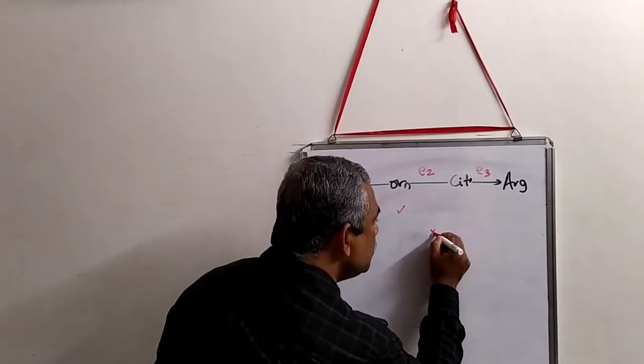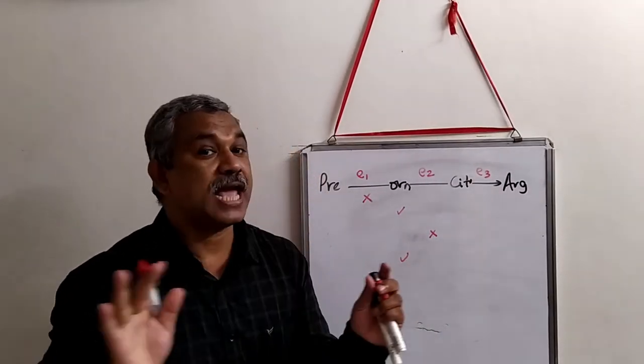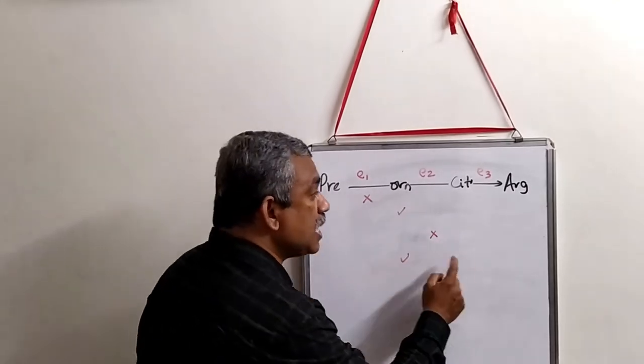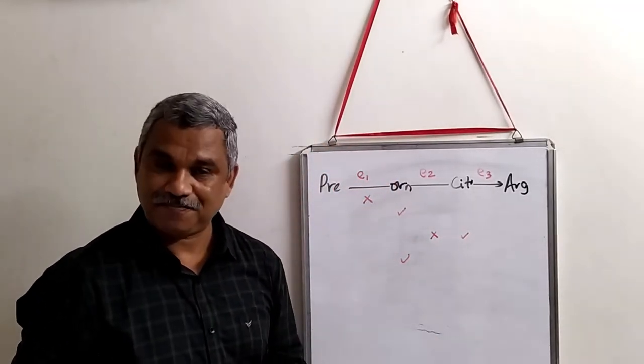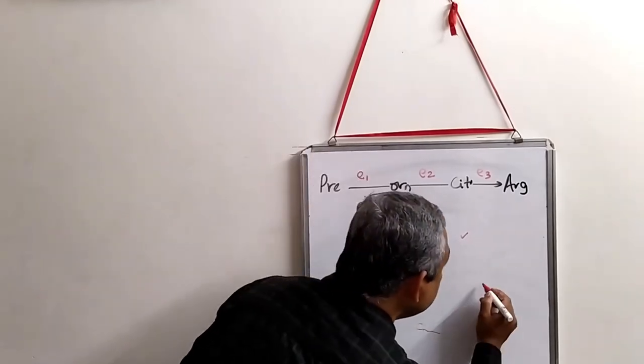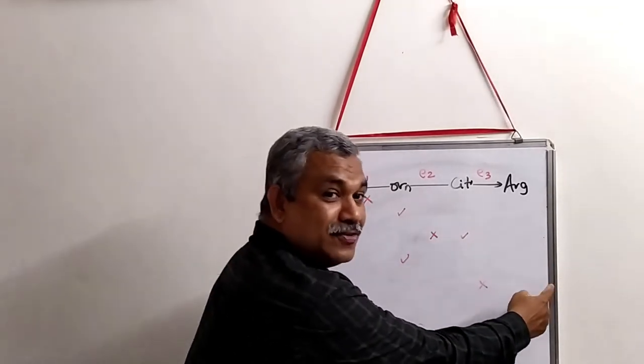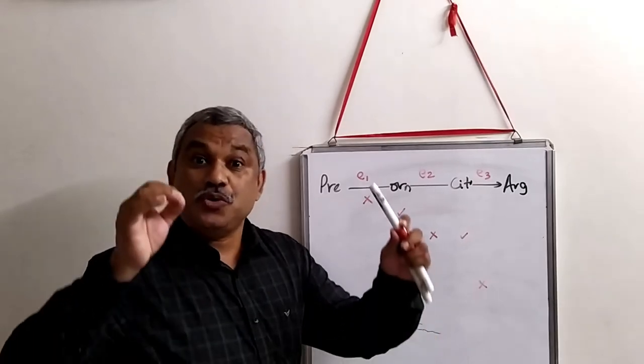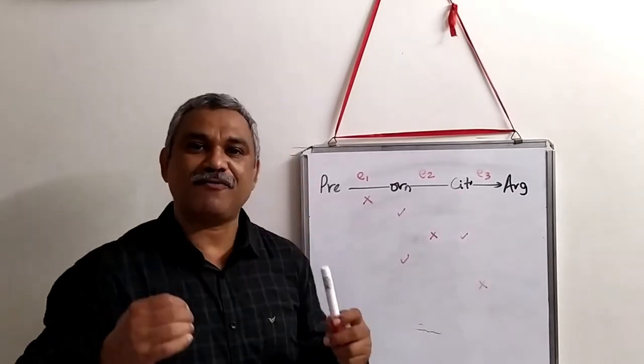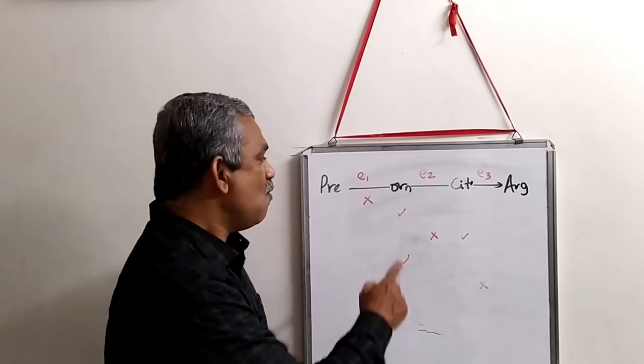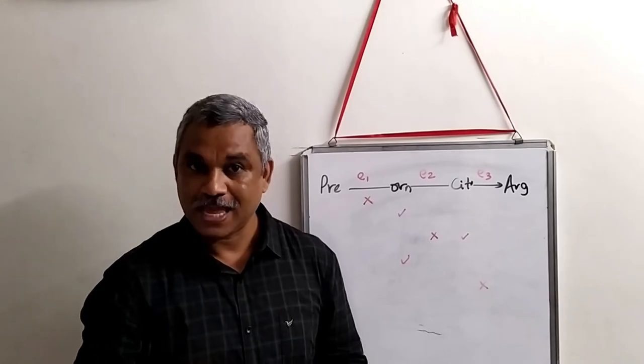Assume E2 is inhibited or mutated. If you give ornithine, the organism cannot survive because ornithine cannot be converted to citrulline—you have to give citrulline then it can make arginine. Similarly, if you inhibit enzyme E3 and give ornithine, it cannot be converted to arginine because this enzyme is mutated, so you have to supply arginine in the minimal media. By using this kind of experiment, they proved that one gene will code for one enzyme or one protein, and we come to know the importance of mutation in elucidating metabolic pathways.